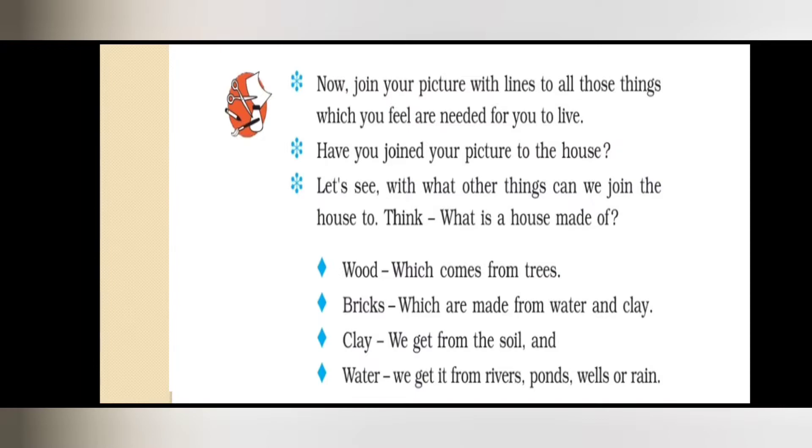Have you joined your pictures to the house? Let us see what other things we can join the house to. Think - what is a house made of? Like wood, which comes from trees. Bricks, which are made from water and clay. Clay - where do we get clay from? We get it from soil. And water we get from rivers, ponds, wells, or rain.